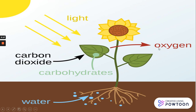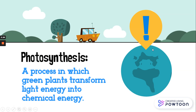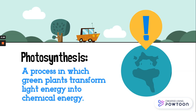بيطلعوا sugar وoxygen. خلينا نقول: الفوتوسينثسيز عبارة عن a process in which green plants transform light energy into chemical energy. بيحول light — اللي هو الطاقة اللي واخدها من الشمس — من light into chemical energy. تفاعل كيميائي بيحصل من الـcarbon dioxide والمية، زي ما قلنا، بيطلع لنا sugar وbيطلع لنا oxygen.